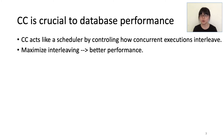Concurrency control algorithm is crucial to the performance of multi-core in-memory databases. At a high level, CC is like a scheduler — it controls how concurrent execution is allowed to interleave in order to guarantee serializability. The more interleaving the algorithm allows, and the more efficient the interleaving, the better the performance.